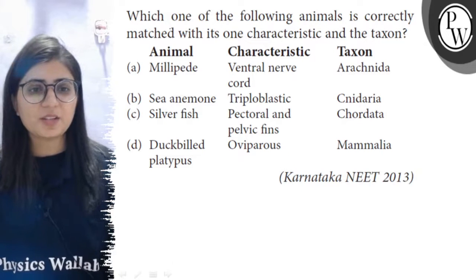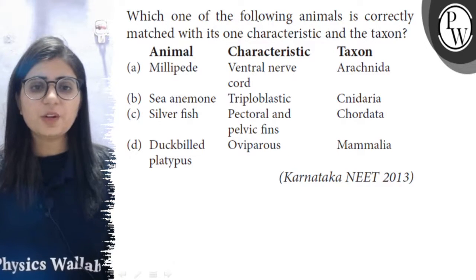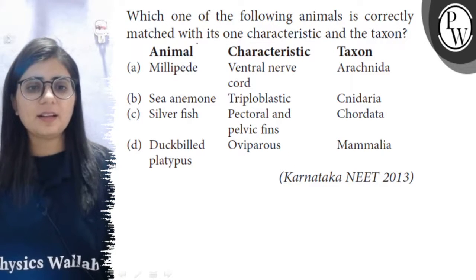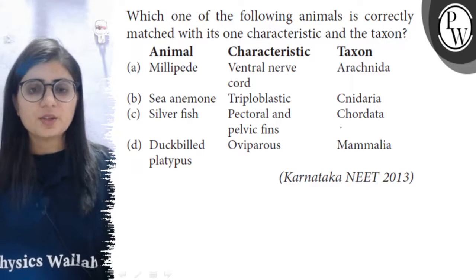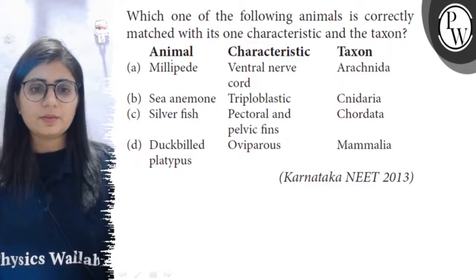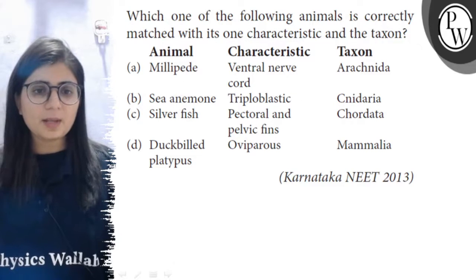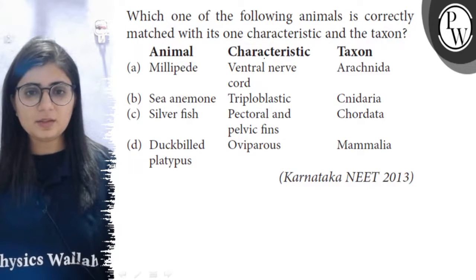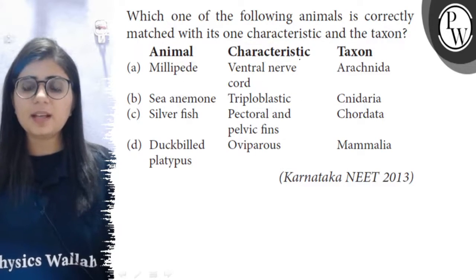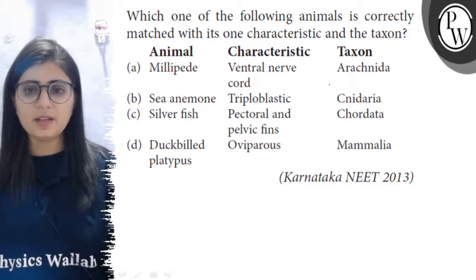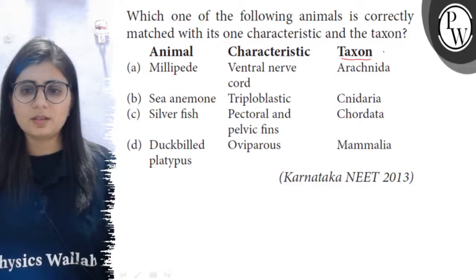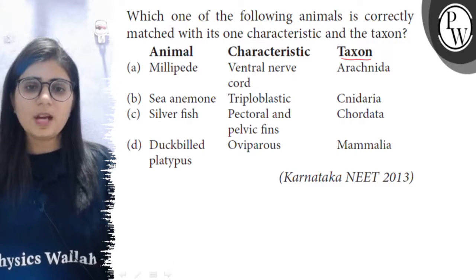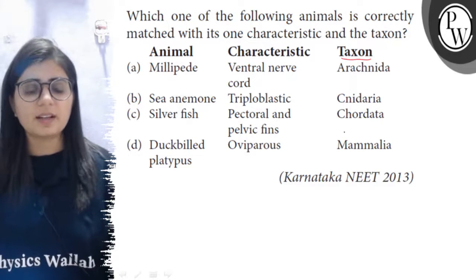Let us see the question: which one of the following animals is correctly matched with one characteristic and the taxon? In the first column the names of animals are given, in the second column the characteristics of these animals are given, and in the third column the taxon — meaning the class, genus, order, or phylum — is given. We have to find which match is correct.